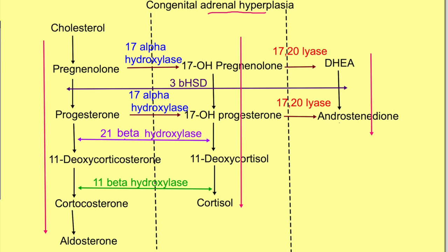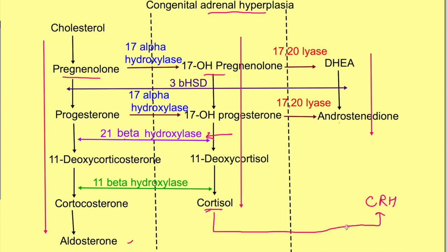For understanding congenital adrenal hyperplasia, some basics are needed. If there is a deficiency of any enzyme, the forward reactions will not proceed and the hormone synthesized in the forward reaction will not be produced. The back products will accumulate. Because of hormone deficiency, the negative feedback — glucocorticoids inhibiting CRH from the hypothalamus and ACTH from the pituitary — will not be operative. So more ACTH and CRH will be synthesized, leading to more accumulation of back products.